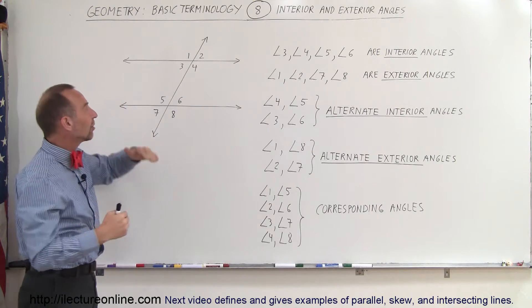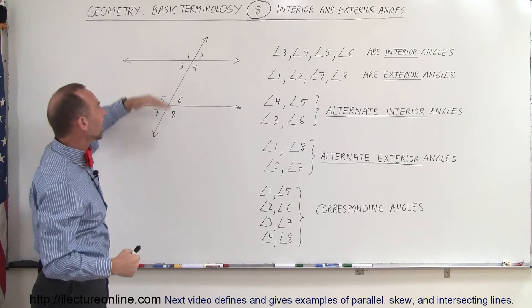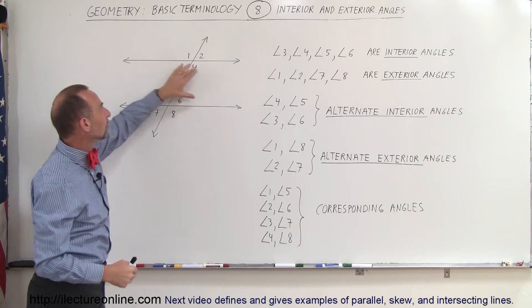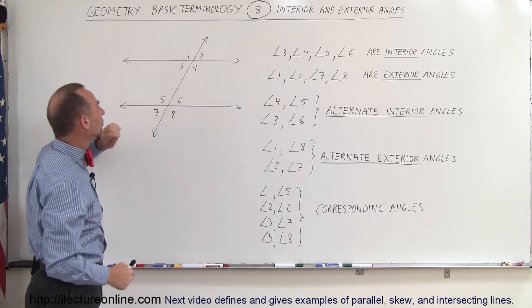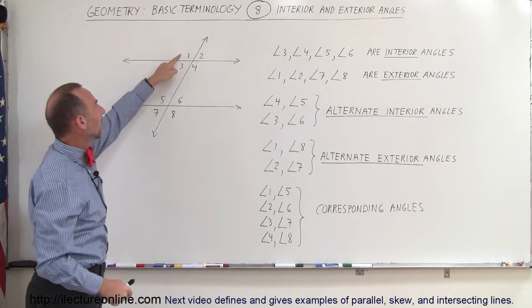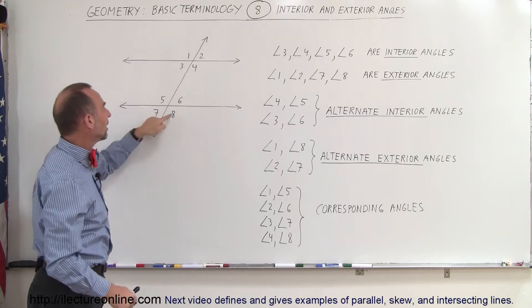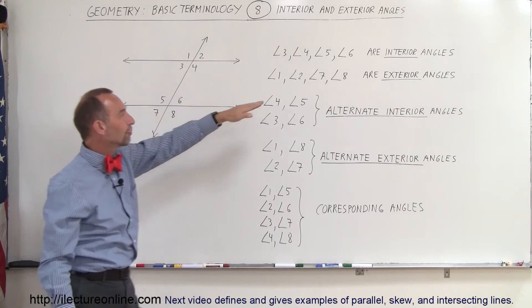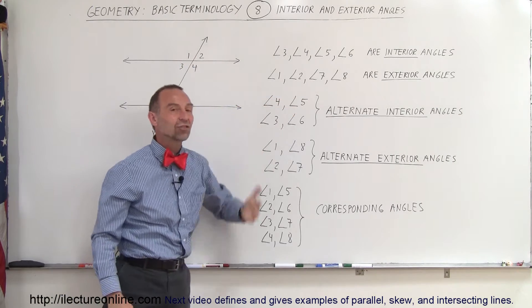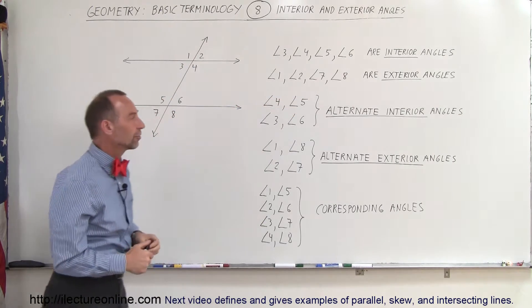And then the angles that are outside the region between the two lines — angle 1, 2, 7, and 8 — those are therefore called exterior angles.